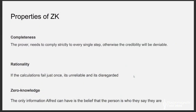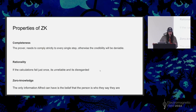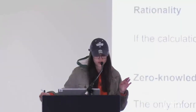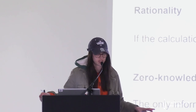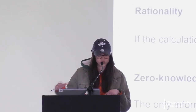In order for an encryption protocol to be classified as Zero Knowledge, it has to abide by three properties. One is completeness — every single step has to be complied, Bruce has to verify and answer every single question Alfred asks. The second is rationality — if Bruce were to make a mistake just once, that breaks Zero Knowledge and it's going to be disregarded. The final one is Zero Knowledge itself — the only information Alfred can have is that that is the person itself. He can only believe the person is who they say they are, but cannot know any sort of personal information.